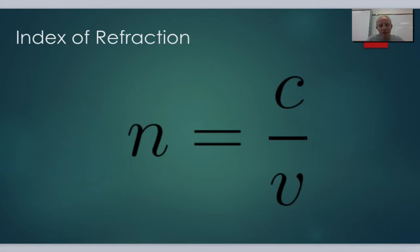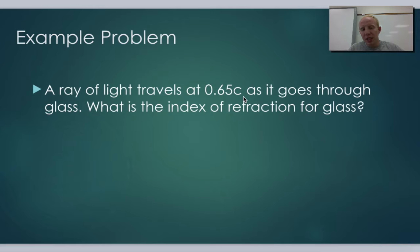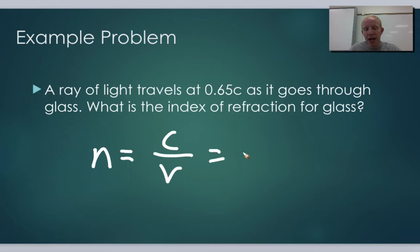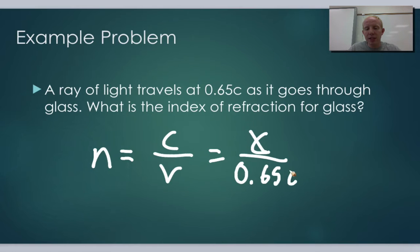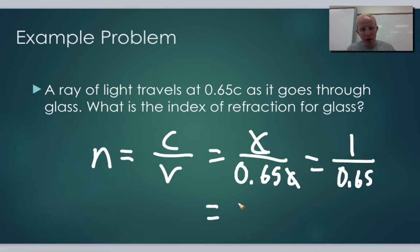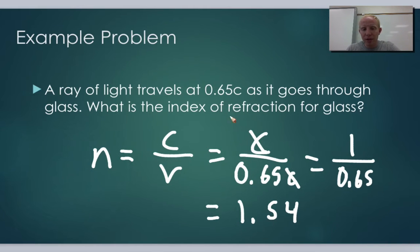We can calculate the index of refraction N = c / v. For example: a ray of light travels at 0.65c through glass — what is the index of refraction? N equals c over 0.65c, so the c's cancel giving 1 over 0.65, which equals 1.54. So the index of refraction for glass is 1.54, meaning light travels at 65% of its normal speed through the glass.